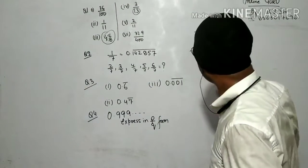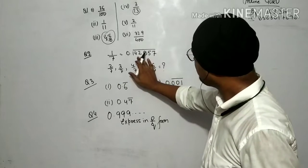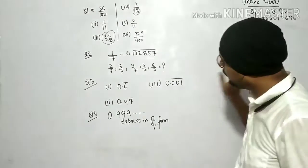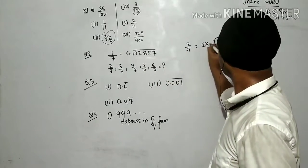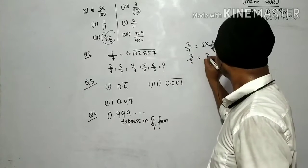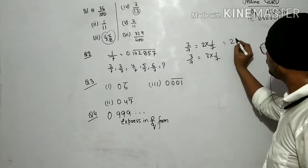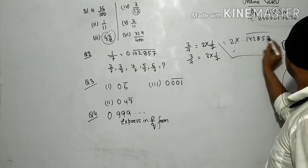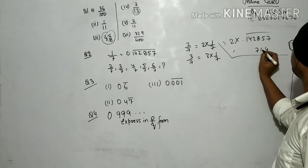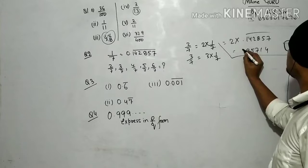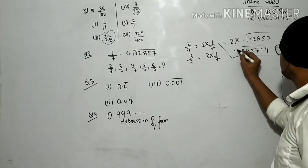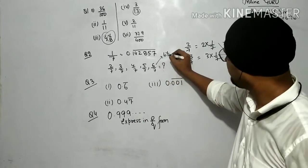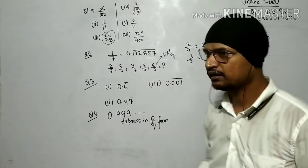1 upon 7 — they have given us the value of 1/7. It means the digits 142857 keep repeating. What is 2 upon 7? It is basically 2 × (1 upon 7). What is 3 upon 7? It is 3 × (1 upon 7). Similarly 4 × (1/7), 5 × (1/7). So we can say 2 × 0.142857 — solve it: 2 × 7 = 14, carry 1; 2 × 5 = 10 plus 1 = 11; and so on, giving 0.285714 with bar. Similarly multiply by 3, 4, 5, and 6 for other values.